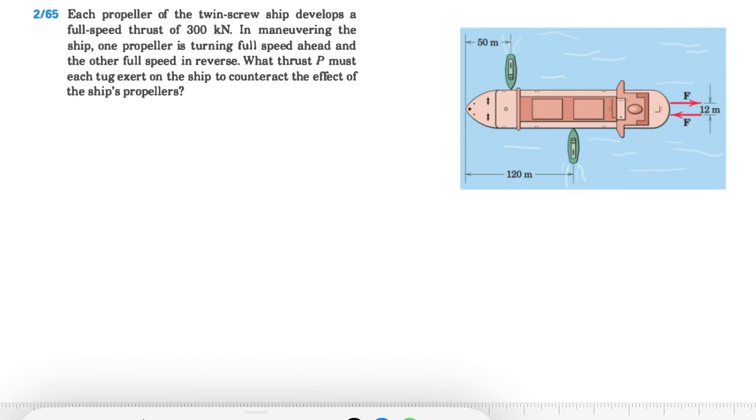What's up guys, welcome back. We're going to be solving another question in today's video. We have question 65 from the second chapter of Miriam textbook, and we have each propeller of the twin screw ship develops a full speed thrust.